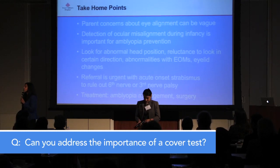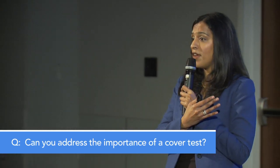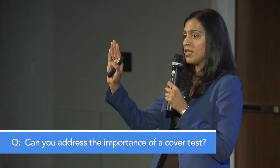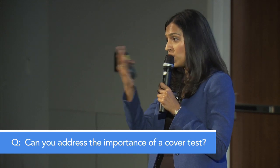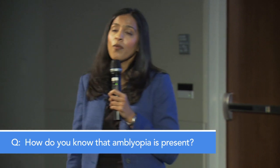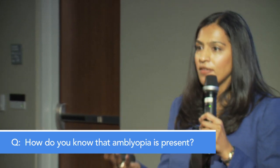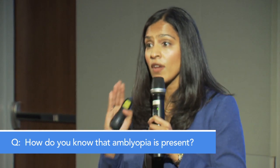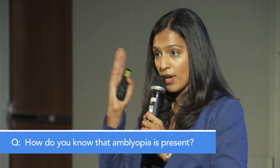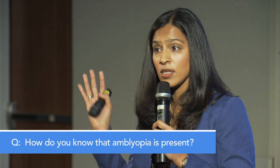Question: can you address the importance of a cover test? Cover testing is critical — with a very subtle esotropia, if you only do light reflex testing with a moving child, you're going to miss it. When you do the cover test and cover the fixing eye, you'll pick up the shift of the strabismic eye. For detecting amblyopia: if a child is only crossing one eye, that's a sign. We use Teller visual acuity in clinic. A strong fixation preference for one eye is the key indicator — if the exotropic eye goes right back out once you uncover it and they keep preferring one eye, you know there's amblyopia in the constantly misaligned eye.